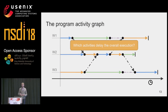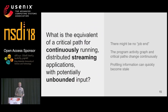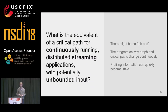The information inside the program activity graph allows us to answer the question of which activities delay the overall execution. Let's apply classical critical path analysis on that trace. You can see all edges which are on a critical path. The critical path ends at worker three because it's the last worker to terminate. However, this is not quite what we want. Note that the program activity graph requires a whole execution trace, so it's not suitable for online scenarios. We ask: what is the equivalent of a critical path for continuously running distributed streaming applications with potentially unbounded input?